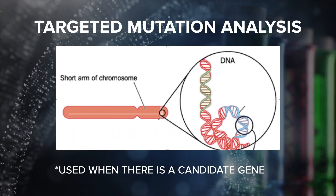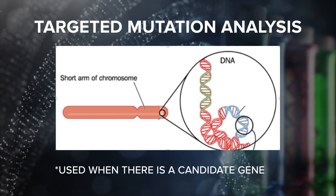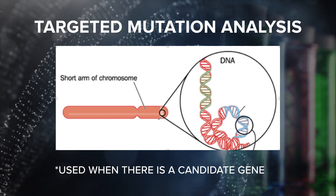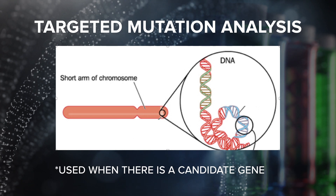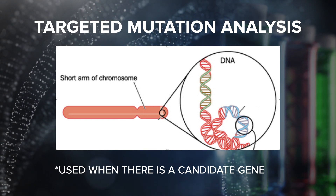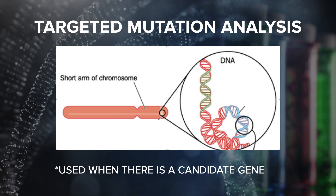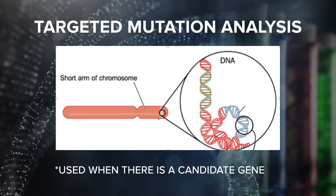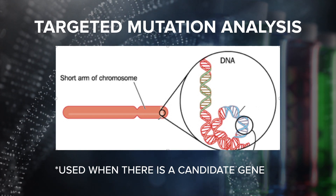Another option is targeted mutation analysis. This is useful when you already have a suspected condition or group of conditions in mind and know where the associated gene is located. For example, if you are testing a patient for sickle cell anemia, there is no need to sequence more than one specific locus. Targeted mutation analysis is usually used for individuals who have an affected family member with a disorder who has already had genetic testing and a specific mutation in a gene was identified. These individuals would then be tested for the same mutation in the same targeted gene.